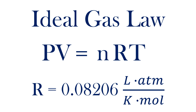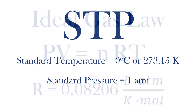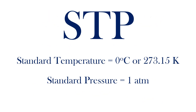Ideal gases were introduced in an earlier video. When dealing with ideal gases and assuming ideal behavior, it is useful to have a standard set of conditions. STP refers to standard temperature and pressure, where the standard temperature is 0 Celsius or 273.15 Kelvin and the standard pressure is 1 atmosphere.